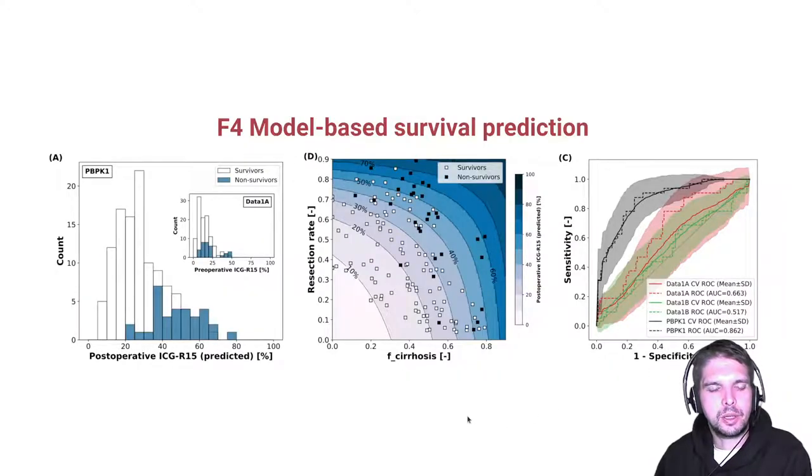In the next step, we used our physiological-based model to predict the postoperative ICG R15 in various subjects. We then, based on our predictions, trained a classifier to predict outcome after partial hepatectomy, especially survival. Our model outperforms clinical data such as the preoperative ICG R15, as can be seen here in the R-C curve.